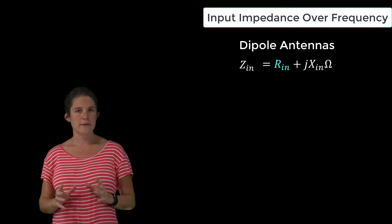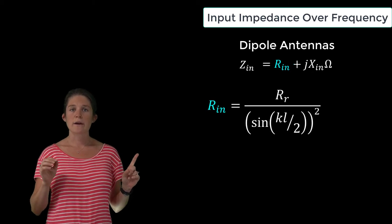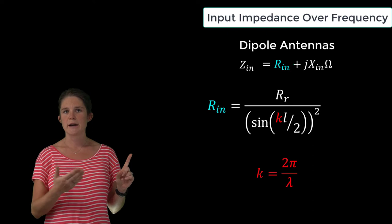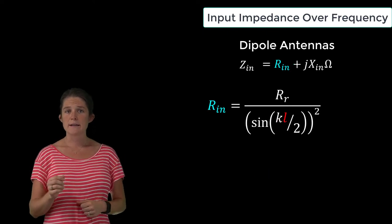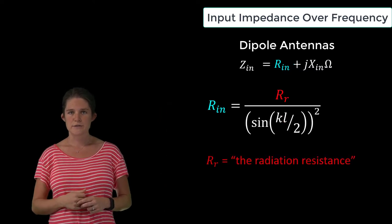Formally, the real part of the input impedance may be calculated from this equation, where k is the wave number of the driving signal, equal to 2π over λ, l is the fixed length of the antenna in meters, and R_r is the radiation resistance.